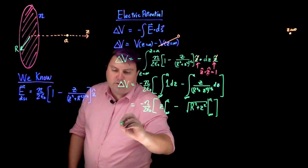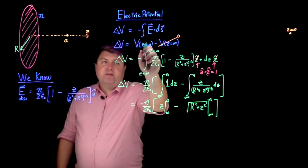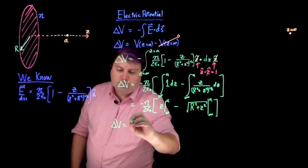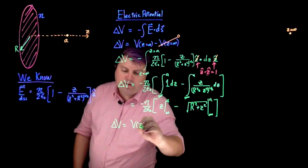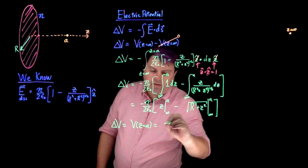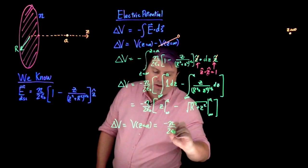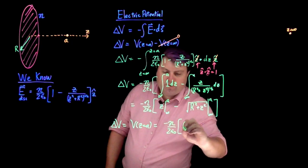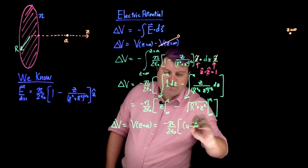So let's put on these evaluations. And again, remember this delta V is equal to V at z equals a, which is equal to negative eta over two epsilon not.